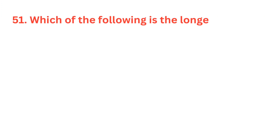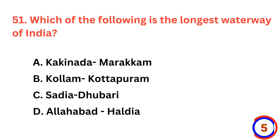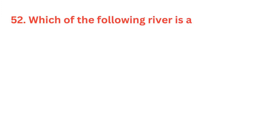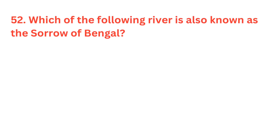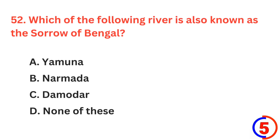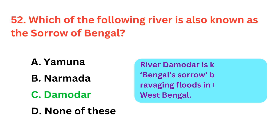Which of the following is the longest waterway of India? The correct answer is option D, Allahabad–Haldia waterway. Which of the following rivers is also known as the Sorrow of Bengal? The correct answer is option C, Damodar.